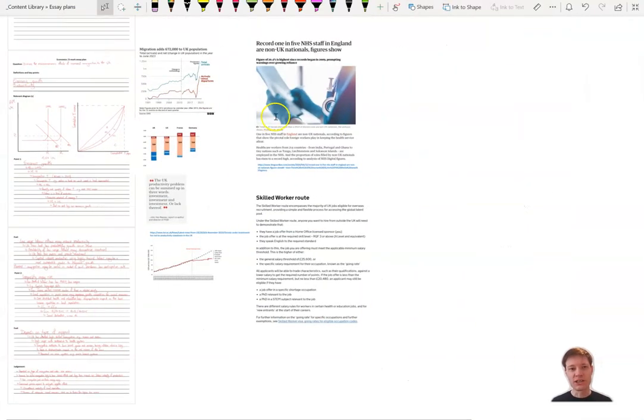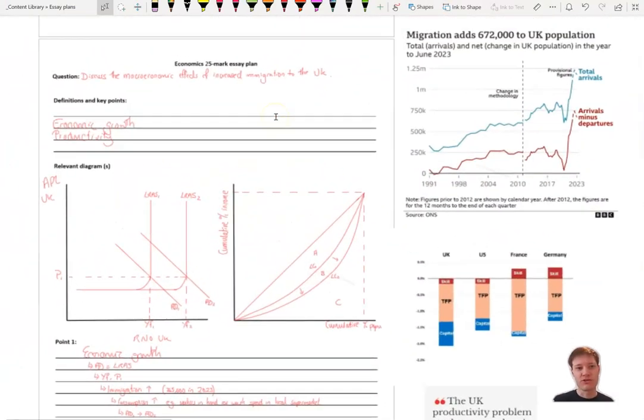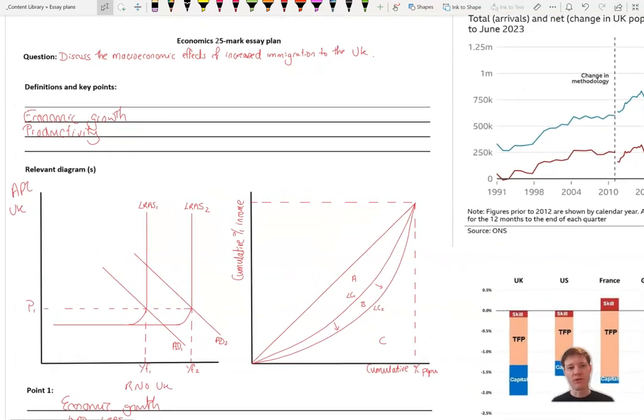Hello, today we're going to be talking about a really current issue, and that is immigration to the UK and the effect of this on the macroeconomy. So discuss the macroeconomic effects of increased immigration to the UK.